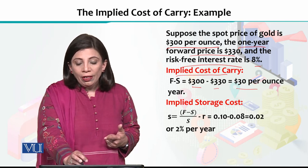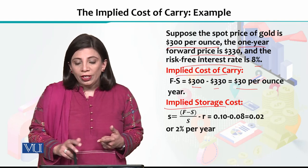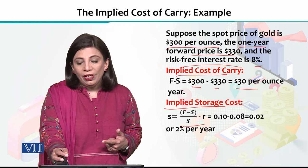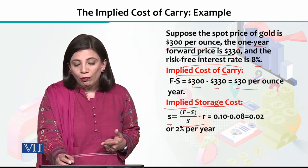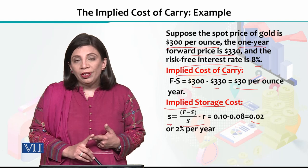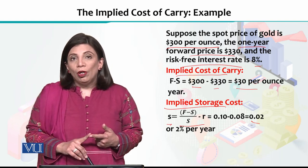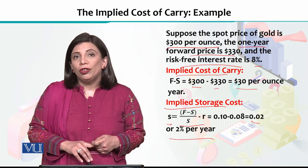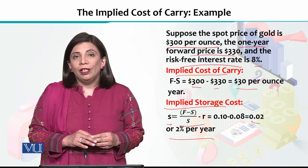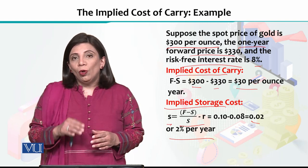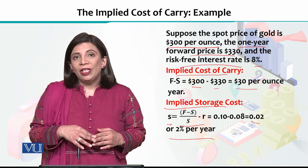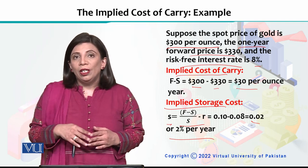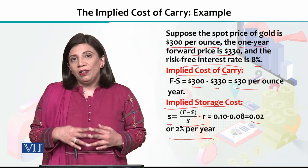To find the implied storage cost, we plug the given values into the storage cost formula. This turns out to be 0.02, or 2% per year. So the storage cost we will incur to invest in gold with a spot price of $300 per ounce and a forward price of $330 per ounce is 2% per year.